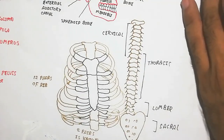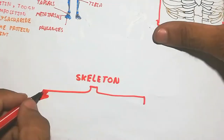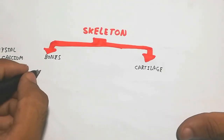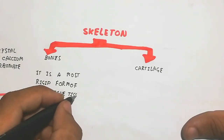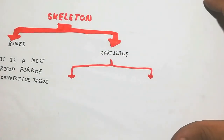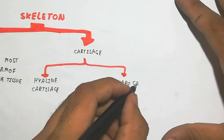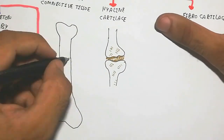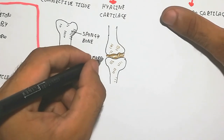The endoskeleton is made up of bones and cartilage. Bone is the most rigid form of connective tissue, composed of connected cells — similar to blood, which is also connective tissue. Cartilage includes hyaline cartilage, present between joints for flexibility and movement, and fibrocartilage, which forms structures like the epiglottis and pinna of the ear. Inside the bone is spongy bone and hard bone, with bone marrow in the center.